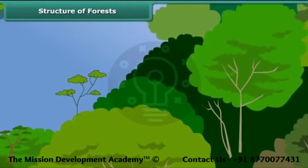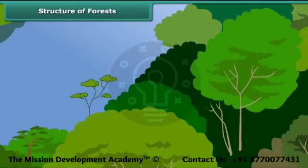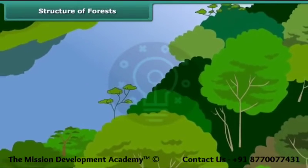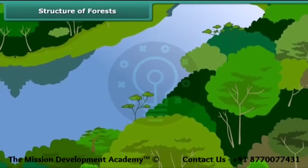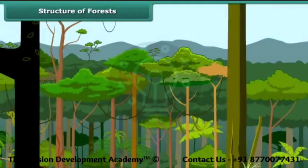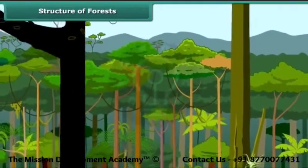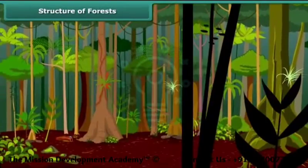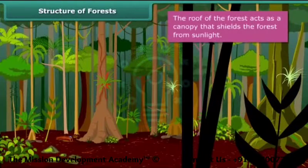The upper part of the trees and shrubs, comprising the branches and the leaves, is known as the crown. The crowns of the tall trees form the roof of a forest. The roof acts as a canopy that shields the forest from sunlight.